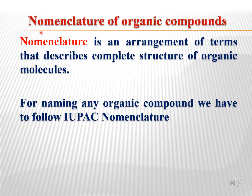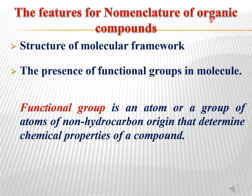Here is a brief discussion about the nomenclature of organic compounds. Nomenclature is an arrangement of terms that describe the complete structure of organic molecules. The features for nomenclature of organic compounds generally depend on two factors: first is the structure of the molecular framework, and the second one is the presence of a functional group in the molecule.